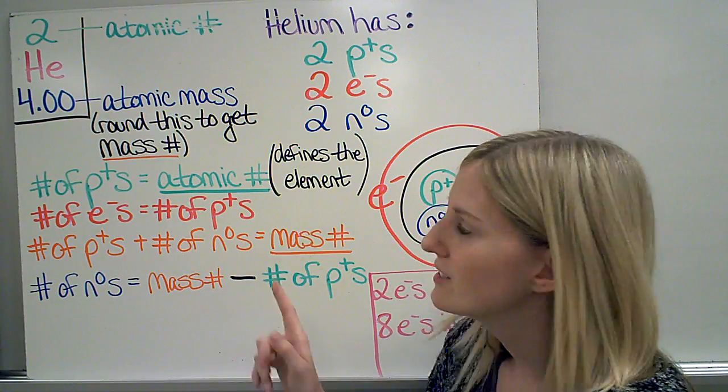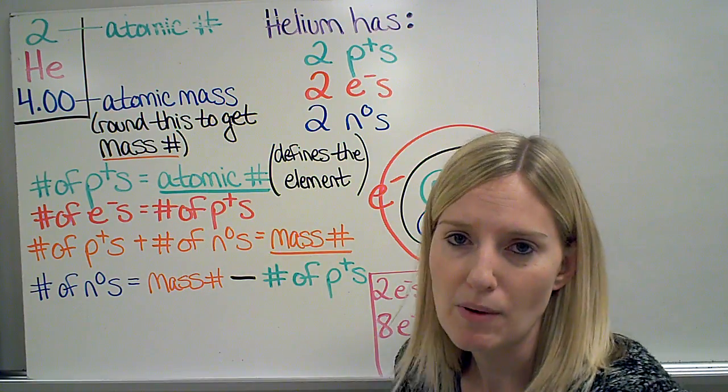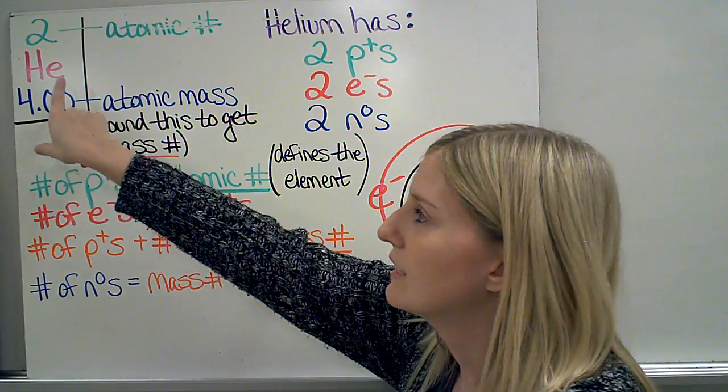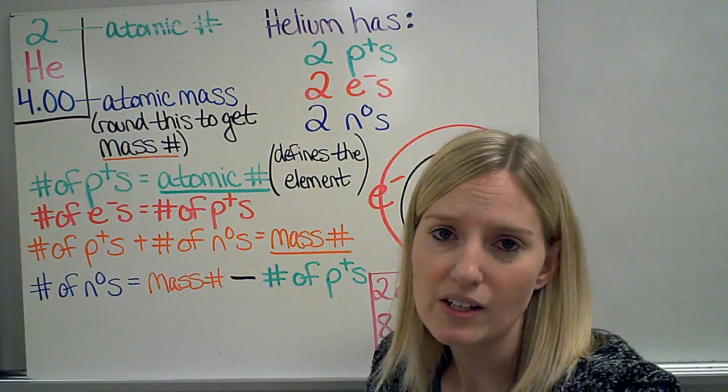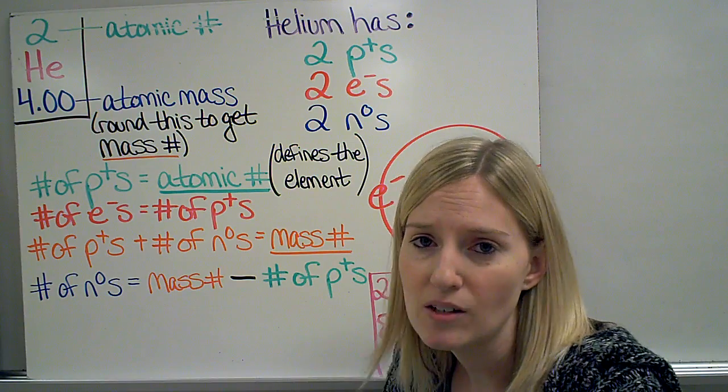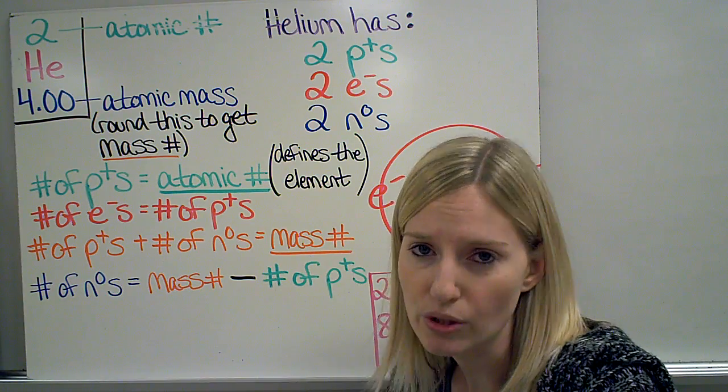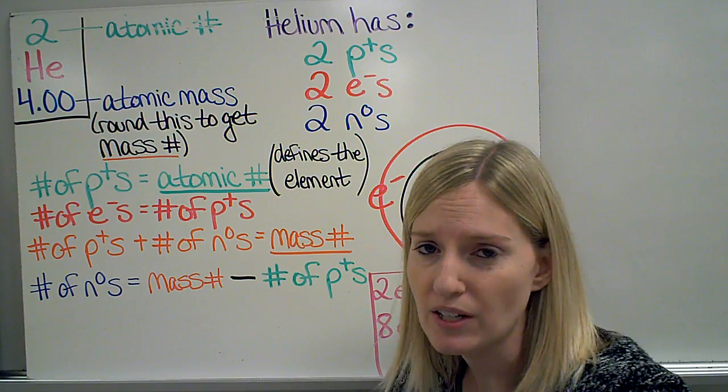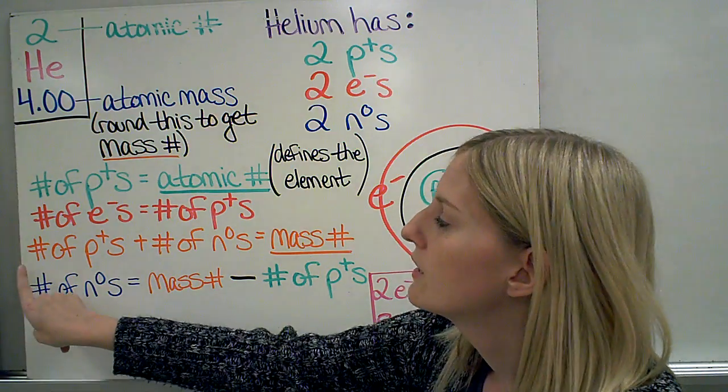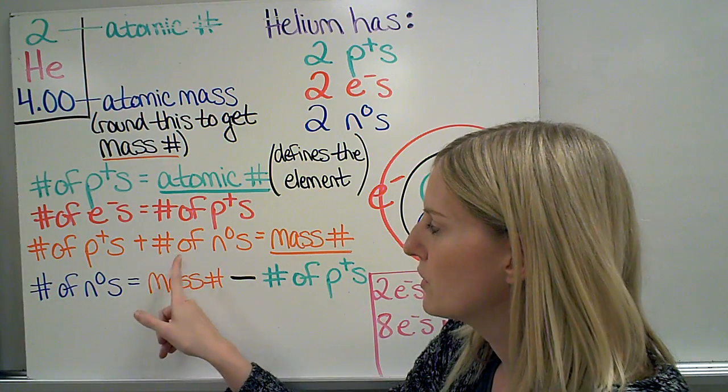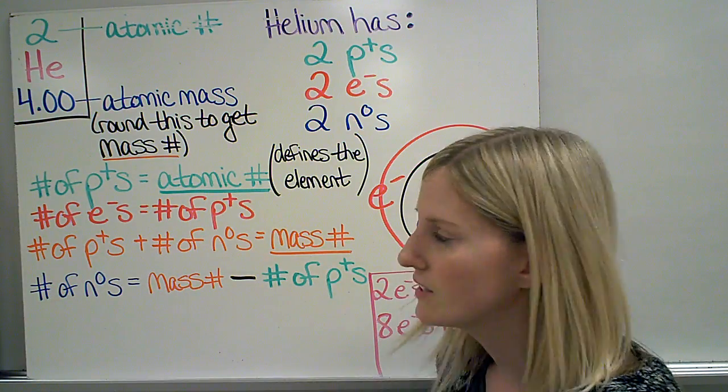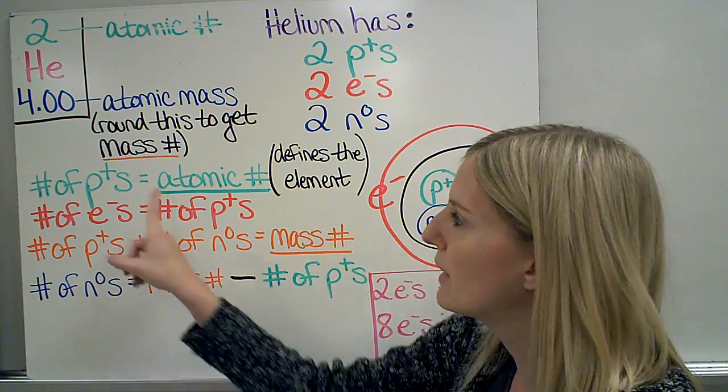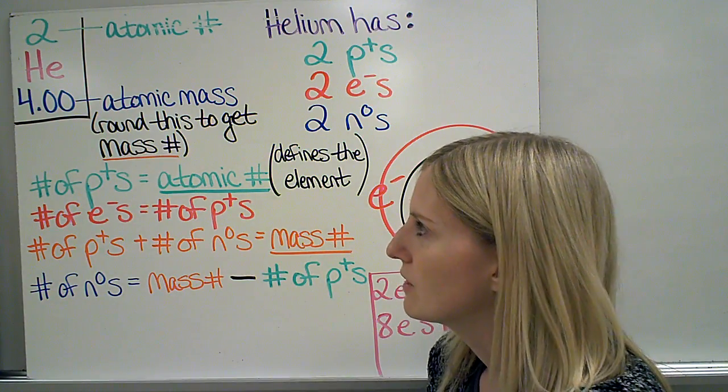The atomic number is important for us because it tells us what element we're talking about. If I tell you that the atomic number is 2, like it is here, you know that I'm talking about helium. No other element has an atomic number of 2. They each have a different atomic number. The number of protons plus the number of neutrons, so everything in my nucleus, is called the mass number. And I can determine that by rounding my atomic mass like we said before.